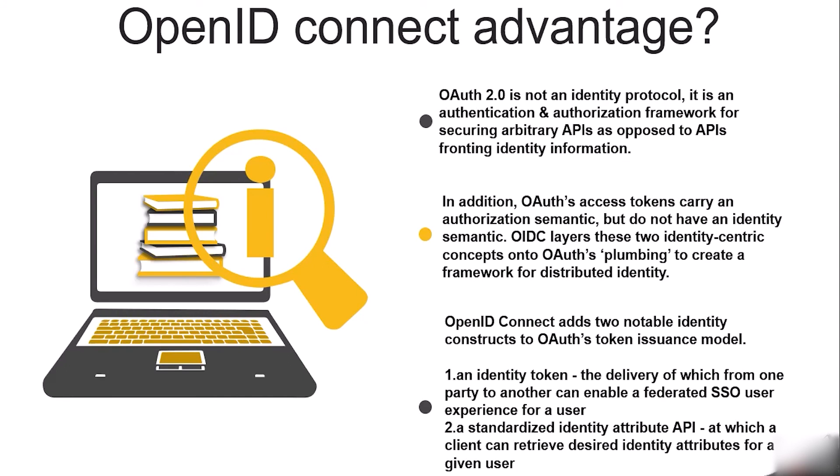The advantages of OpenID Connect: OAuth 2.0 is not an identity protocol — it is an authentication and authorization framework for securing arbitrary APIs. Since OpenID Connect is built on top of OAuth, the implicit advantages of OAuth carry over. OAuth access tokens carry authorization semantics but not identity semantics. The OpenID Connect layer adds identity-centric concepts onto OAuth to create a framework for distributed identity. Specifically, it adds an ID token enabling federated SSO, and a standardized identity attribute API from which a client can retrieve desired identity attributes for a given user.